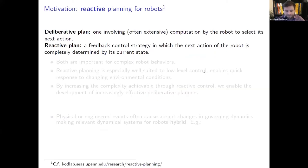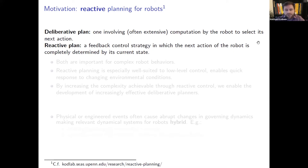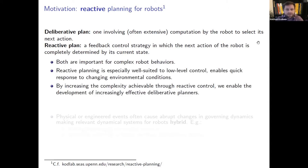Before discussing hybrid systems, he steps back to motivate dynamical systems in general for controlling robots. In Dan Koditschek's group, people discuss deliberative plans and reactive plans. A deliberative plan involves deliberation and takes time for the robot to decide what to do next, while a reactive plan is purely feedback-based — the next action is completely determined by the robot's current state.